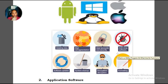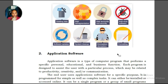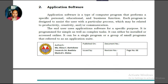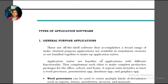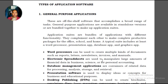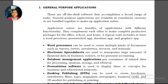That covers system software. Then we go to application software — the ones we commonly use for productivity, creativity, or communication. Under application software, we have general purpose applications.